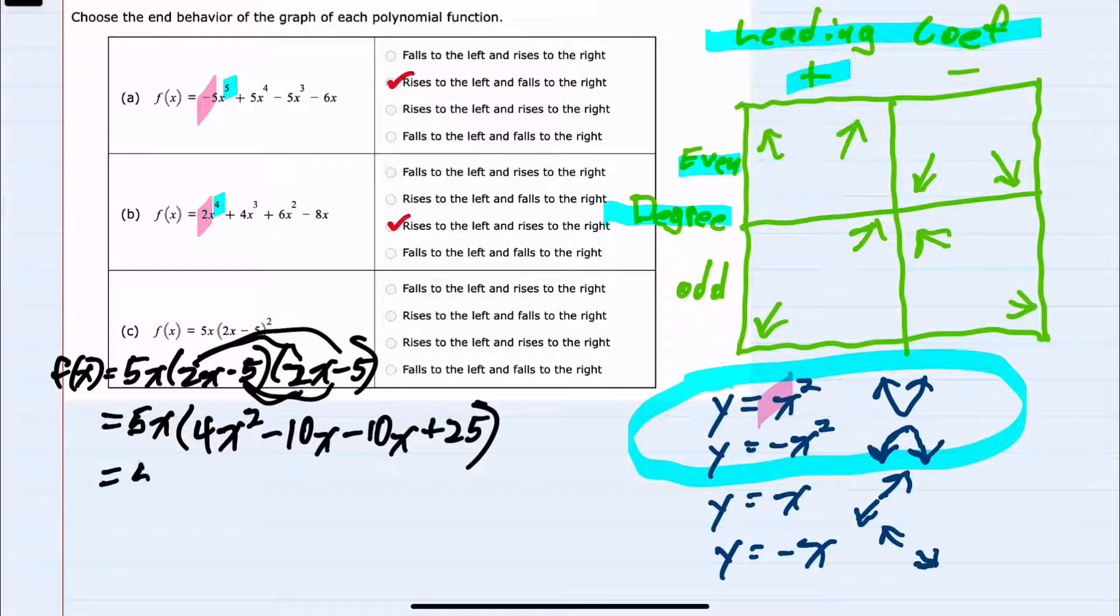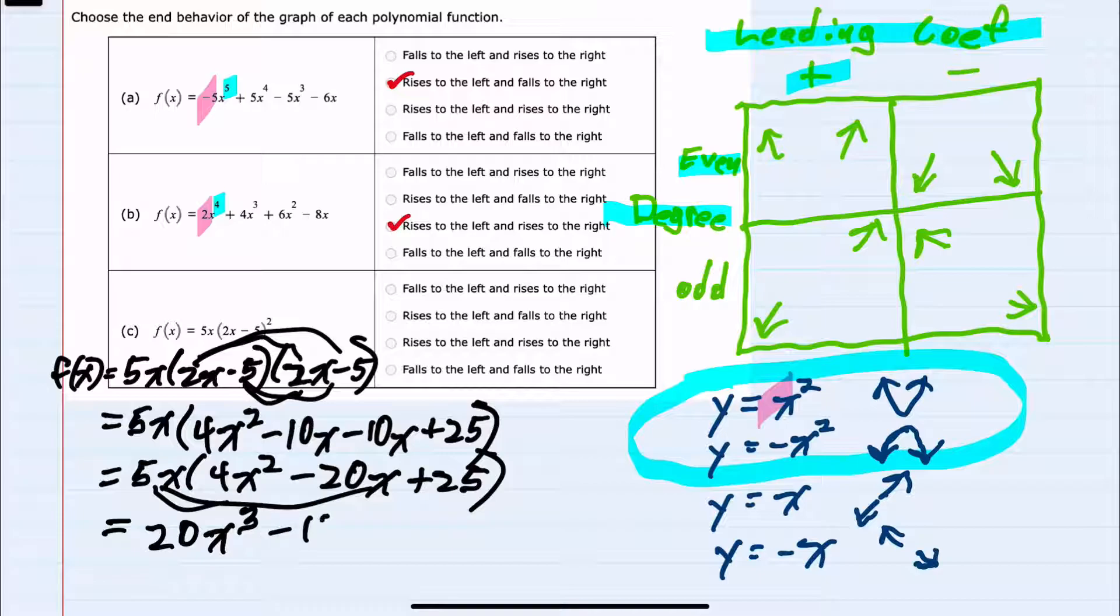Before distributing the 5x, I can simplify inside the parentheses by combining the like terms, minus 10x minus 10x is a minus 20x. And then distributing the 5x gives me 20x³ minus 100x² plus 125x.